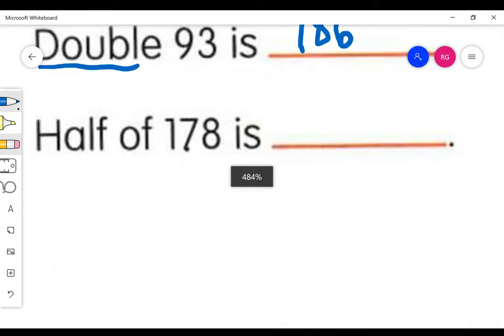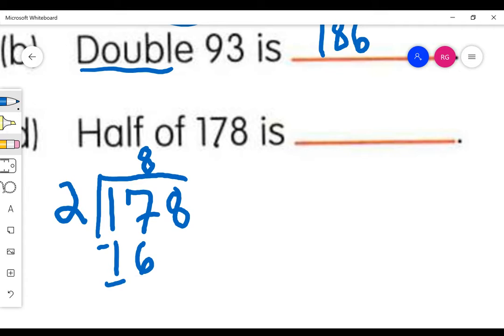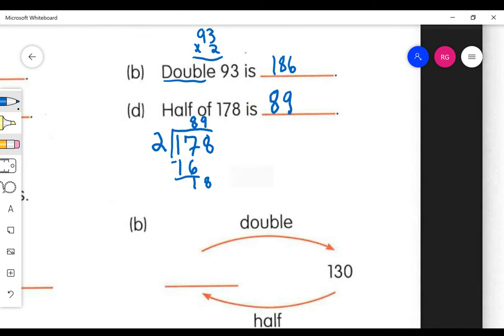And the next one, part D, says half of 178 is what? So let's take 178 divided by 2. 2 times what is 17? I should say 8 with a remainder here of 1. Bring down my 8, and 2 goes into 18 nine times. So the answer should be 89. That's half of 178.